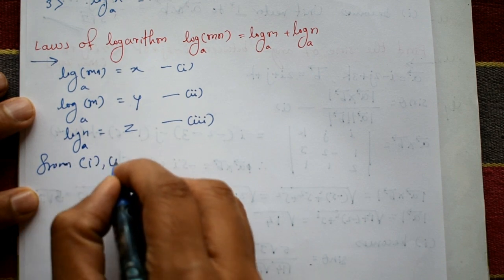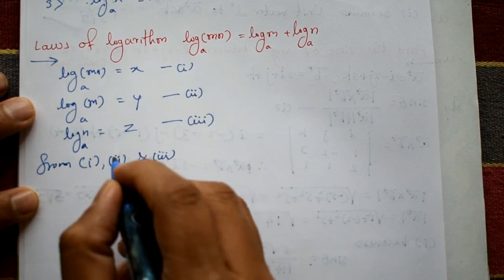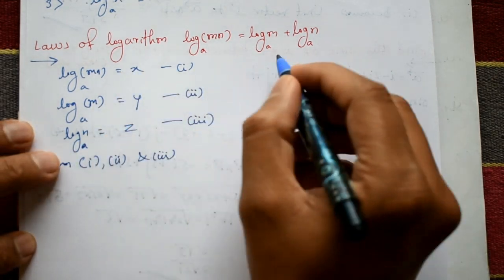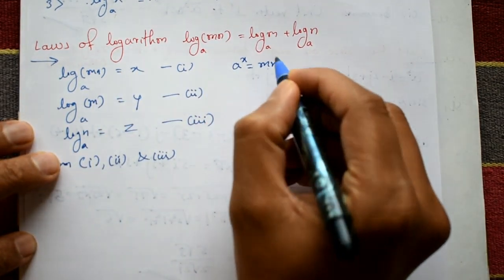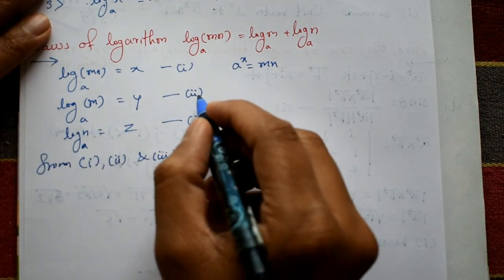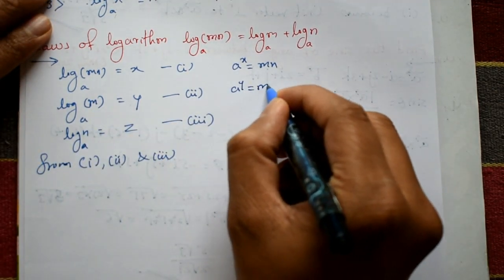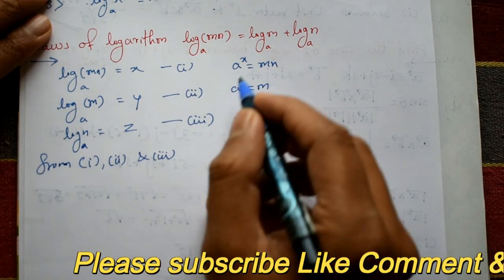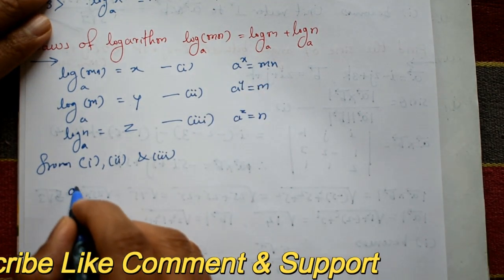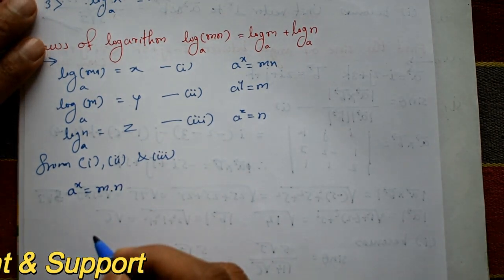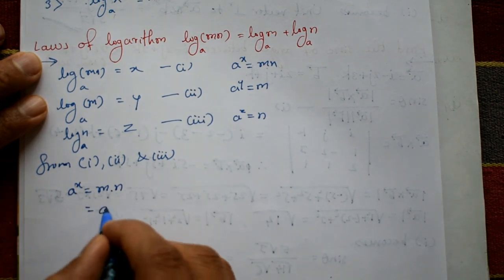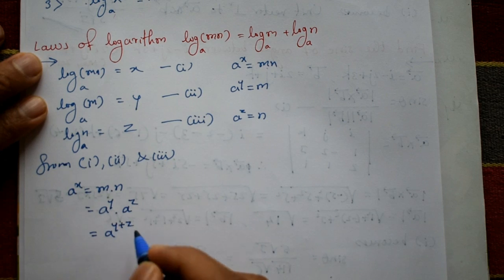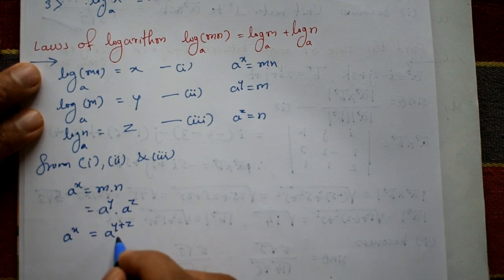From equations one, two, and three: from equation one, a raised to x equals mn. From equation two, a raised to y equals m. From equation three, a raised to z equals n. So a raised to x equals m times n, which means a raised to x equals a raised to y times a raised to z, which equals a raised to (y plus z).